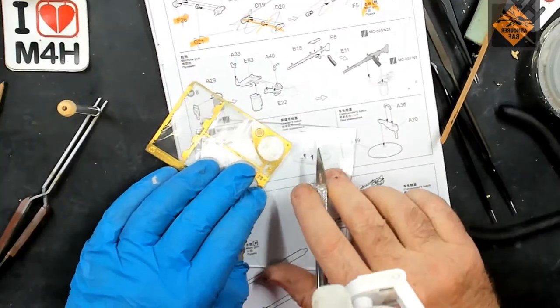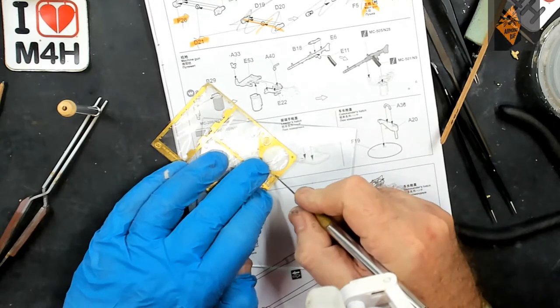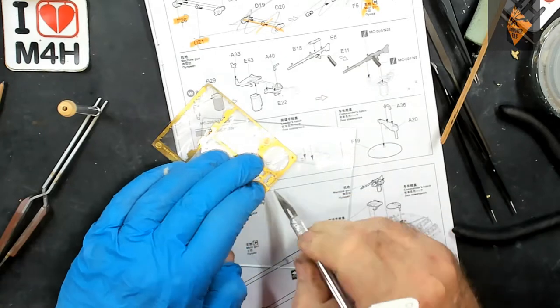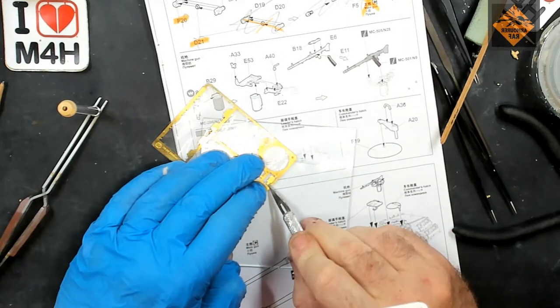Now for another MG34 and to start it off, a small piece of PE that goes on the ammo pouch. So let's crack on and get this MG34 done!